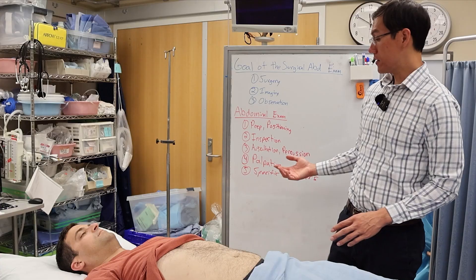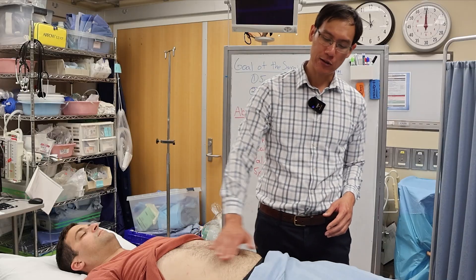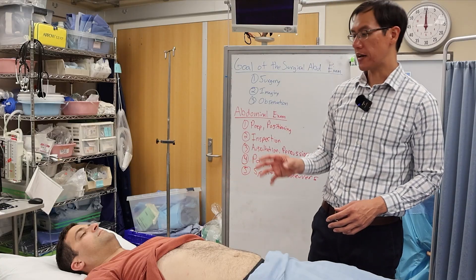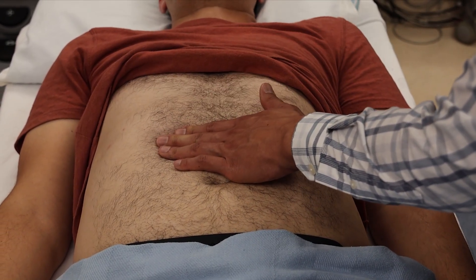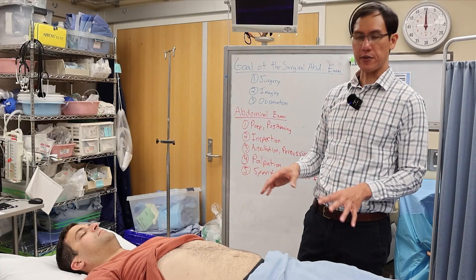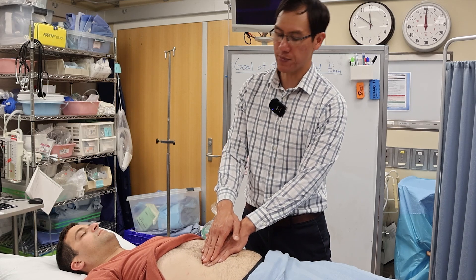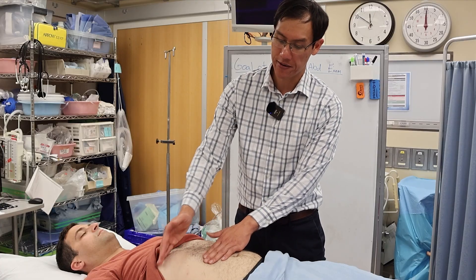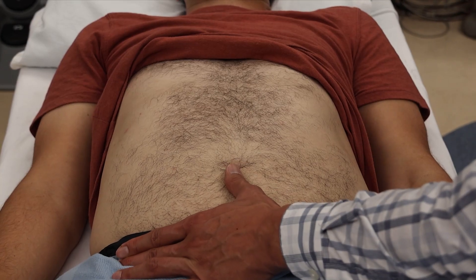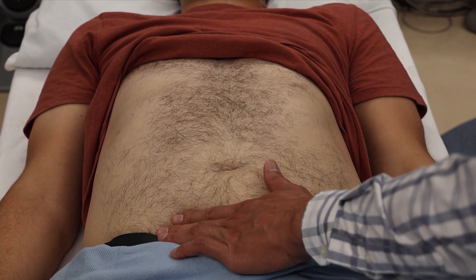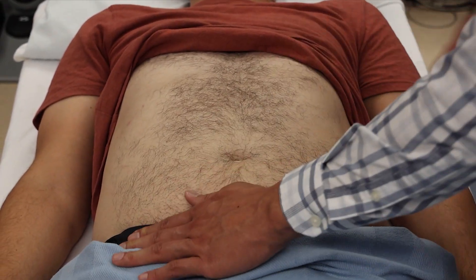After palpation, there are specific maneuvers to perform. Murphy's sign is for right upper quadrant pain — it is pinpoint tenderness in the right upper quadrant so severe that it causes cessation of inspiration. It is a classic finding of cholecystitis, as the pain irritates the liver and diaphragm. McBurney's point is located one-third of the way along an imaginary line from the anterior superior iliac spine to the umbilicus — pinpoint tenderness there is a strong sign of appendicitis.